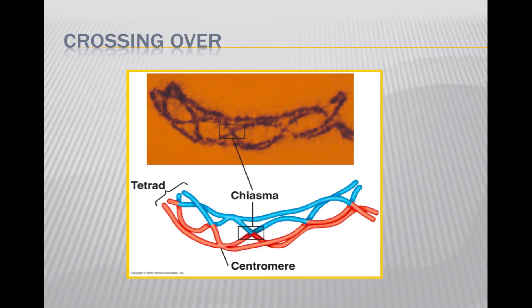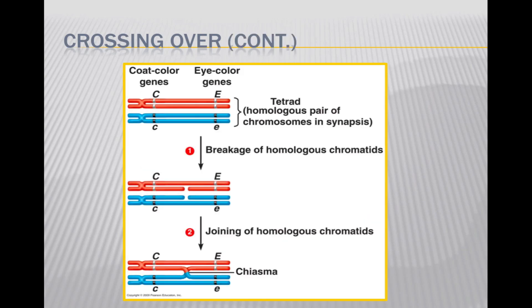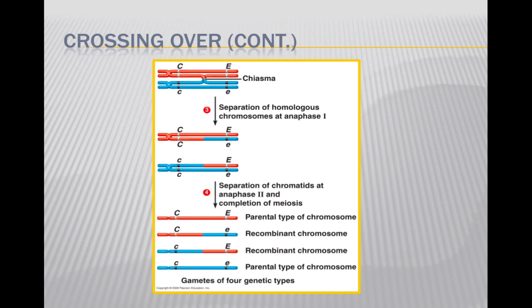Due to crossing over of homologous pairs in prophase I, tetrads are formed and are held together at the site of crossing over, now known as chiasma. Shown is a tetrad with coat color and eye color genes labeled. The DNA molecules of two non-sister chromatids — one maternal in red and one paternal in blue — break at the same location. Immediately, the two broken chromatids join together in a new way. In effect, the two homologous segments trade places, or cross over, producing hybrid chromosomes with new combinations of maternal and paternal genes. When homologous chromosomes separate in anaphase I, each contains a new segment originating from its homologue. Finally, in meiosis II, the sister chromatids separate, each going to a different gamete.